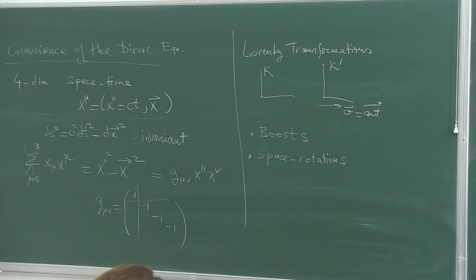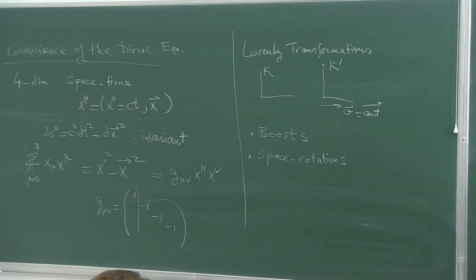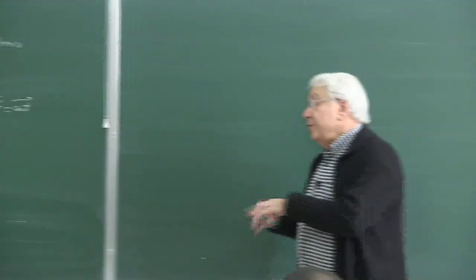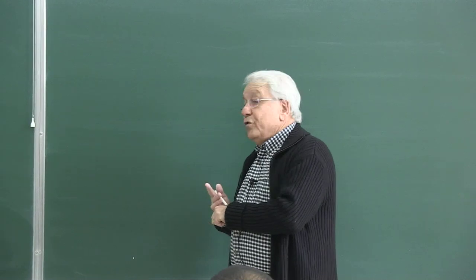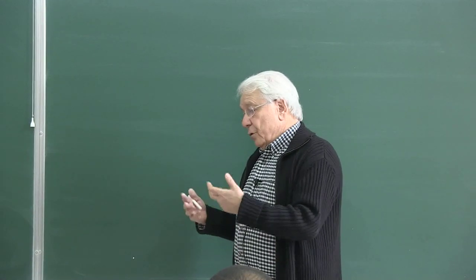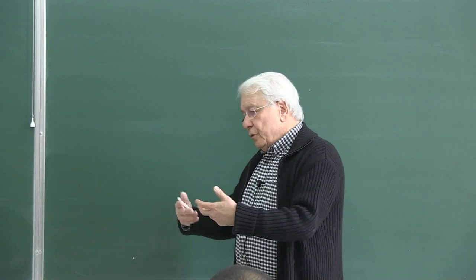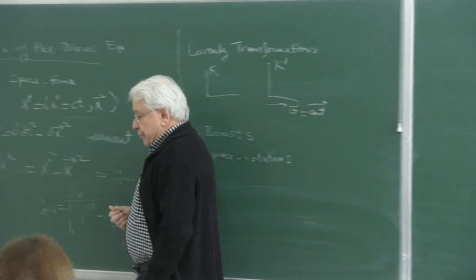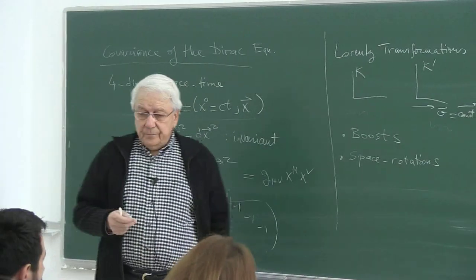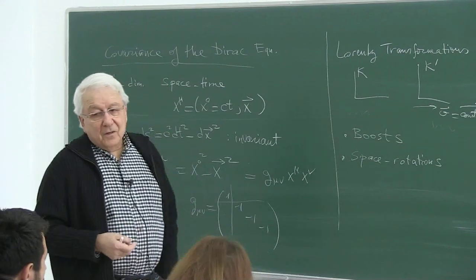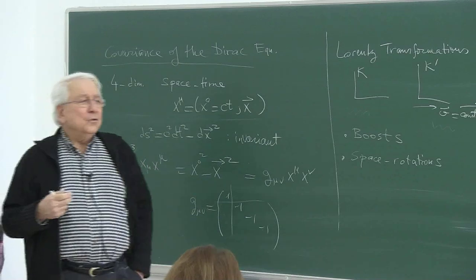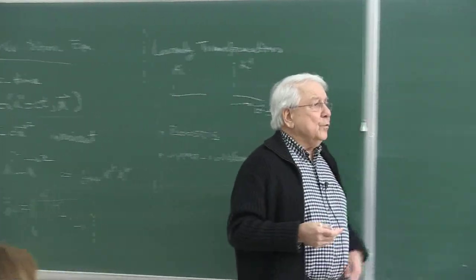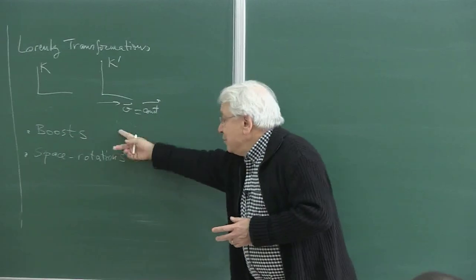In order to show that the Dirac equation is indeed covariant, we have to develop some theorems so that covariance is automatically built in. So first I need to convert the Dirac equation into a four-dimensional form ready for the covariance proof. Then we play with the Lorentz transformations, constructing the boosts and the rotations. There are three boosts and three space rotations — altogether six transformations in four-dimensional spacetime.